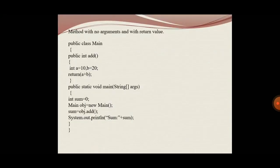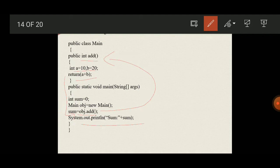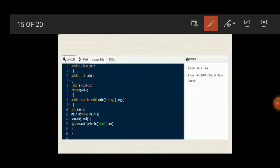Next is the method with no argument and with return type. In this type, no value is passed from the calling method to the called method, but a value is returned from the called method to the calling method. In this program, a slight change is made — inside add(), instead of printing, we have return a + b. Then sum equals obj.add(), the add() method is called, the value a plus b (which is 30) is returned to sum, and sum is printed. So it is a method with no argument but with a return value. The same program is executed and we have got the output.